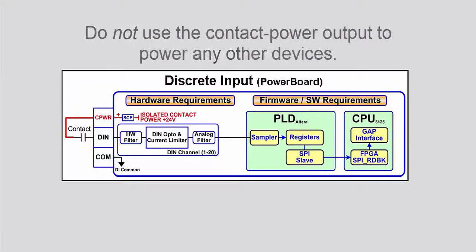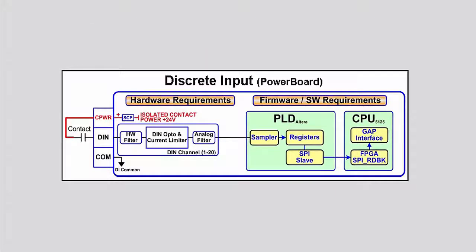This supply includes short circuit and over voltage protection. Do not use the contact power output to power any other devices. The contact output power on pins 21, 22, and 23 can supply up to 150 milliamps maximum. If desired, an external 16 to 32 volt DC power source can be used for the circuit.